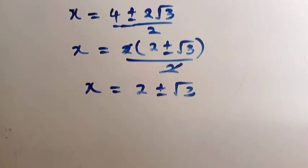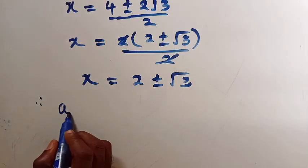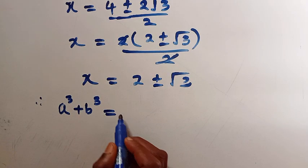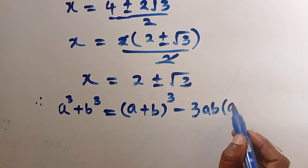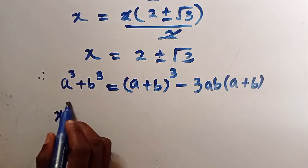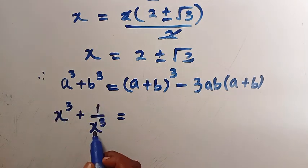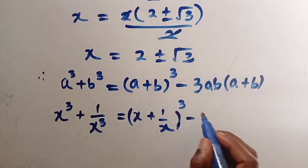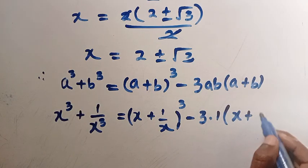This is the value of x. Either plus or minus will satisfy what we need. Let's recall the algebraic identity: a cubed plus b cubed equals (a plus b) raised to power 3 minus 3ab times (a plus b). This is relevant because the right side is x cubed plus 1 over x cubed. Comparing, let a equal x and b equal 1 over x. We get: (x plus 1 over x) cubed minus 3 times x times (1 over x), which equals 1, times (x plus 1 over x).